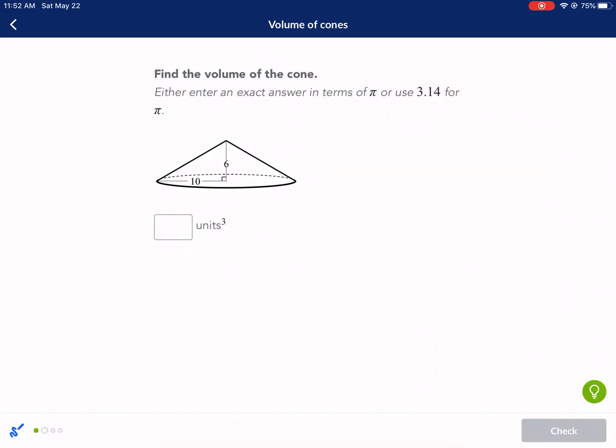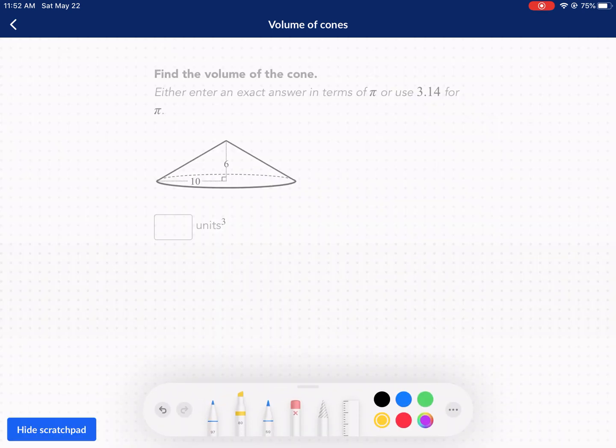Either enter an exact answer in terms of pi, or use 3.14 for pi. Same thing. I'm surprised it gives us such an easy one. So we have our radius here. We have our height here. And we're ready to apply our formula.